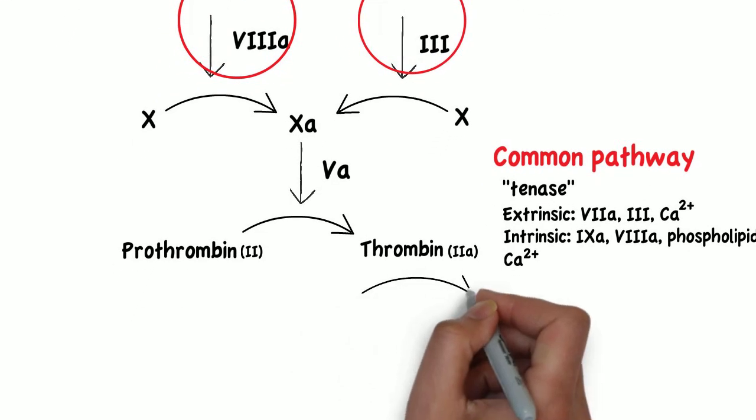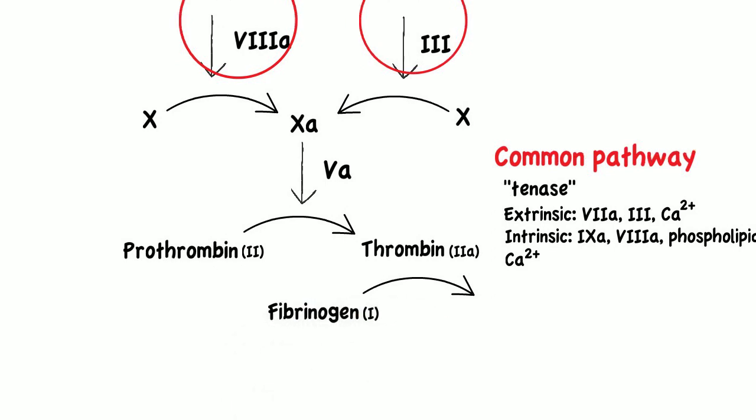Thrombin, in turn, cleaves fibrinogen, which is factor 1, into fibrin, which is factor 1a.